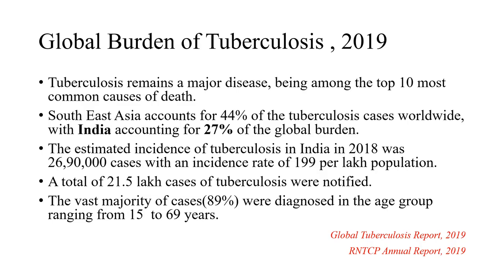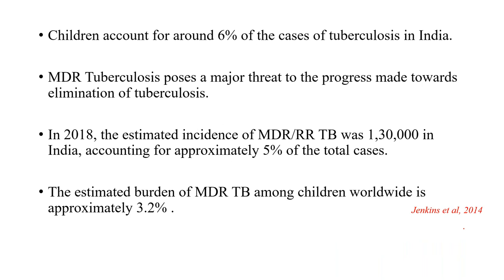The global burden of tuberculosis — this is 2019-20 data. It remains one of the top common causes of death. Southeast Asia accounts for around 44% of tuberculosis cases worldwide, with India accounting for around 27% of the global burden. The estimated incidence in India in 2018 was around 27 lakh cases, of which around 21.5 lakh were detected. Children account for around 6% of cases of tuberculosis in India.